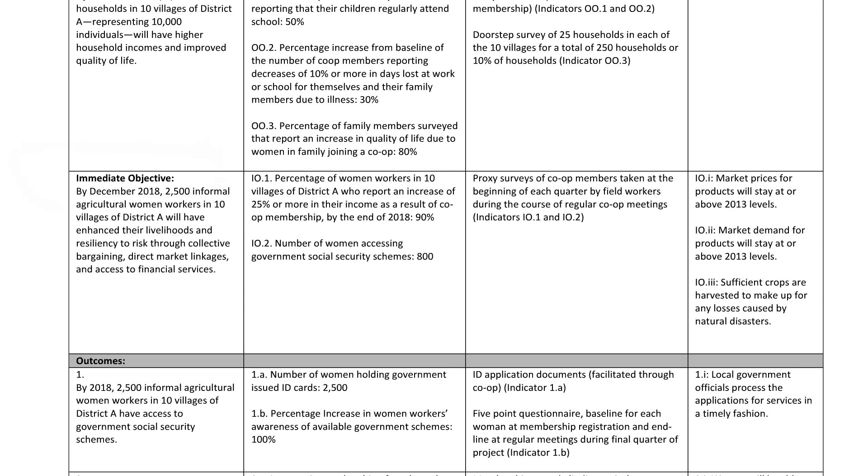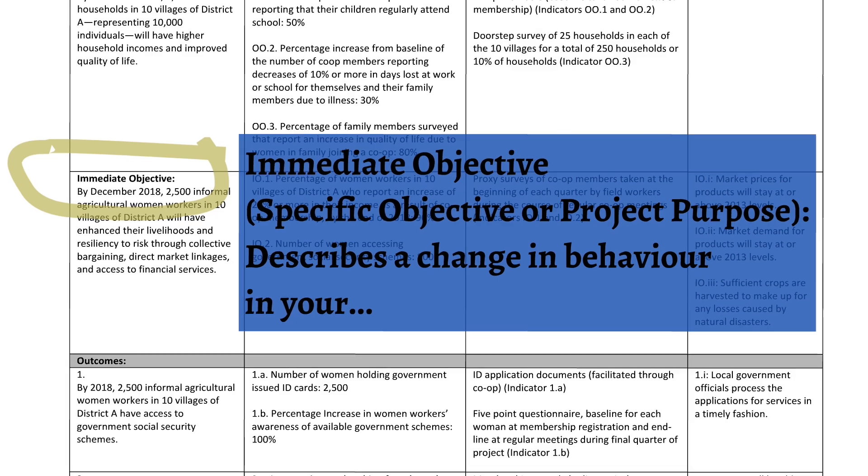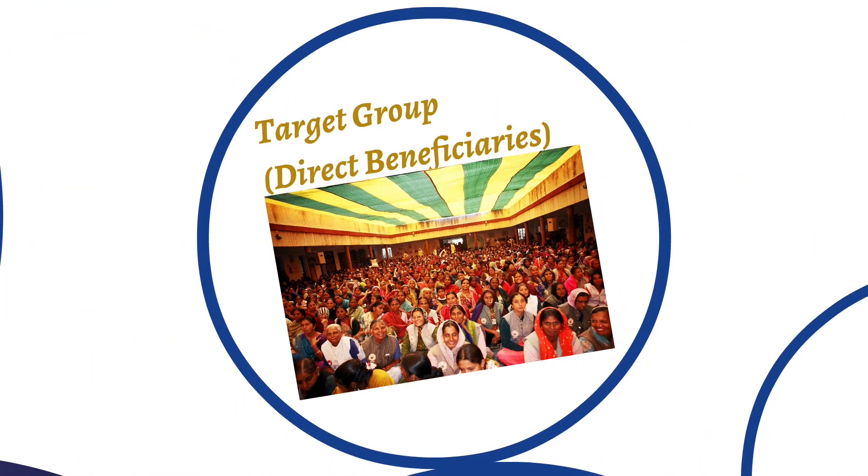And I'm going to start in the middle here with the immediate objective. So just quickly, the immediate objective is also sometimes called the specific objective or the project purpose. And it is meant to describe a change in behavior in your target group or your direct beneficiaries. So these are the people who your project is designed to help. And if you are a member-based organization, these are likely your members.